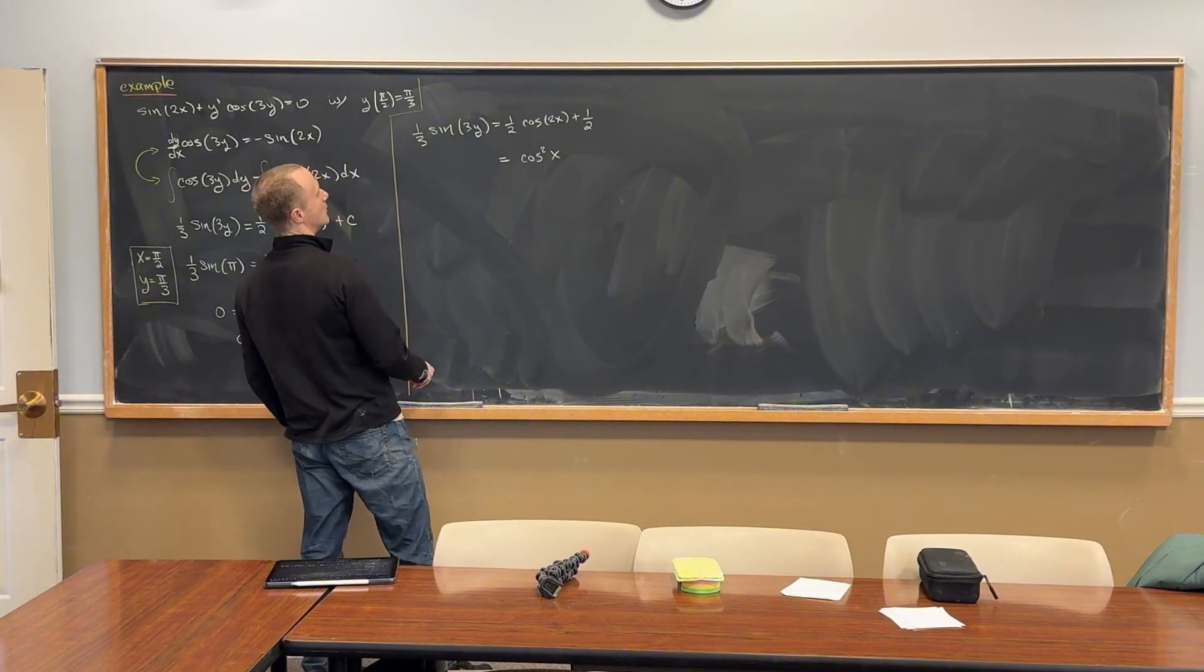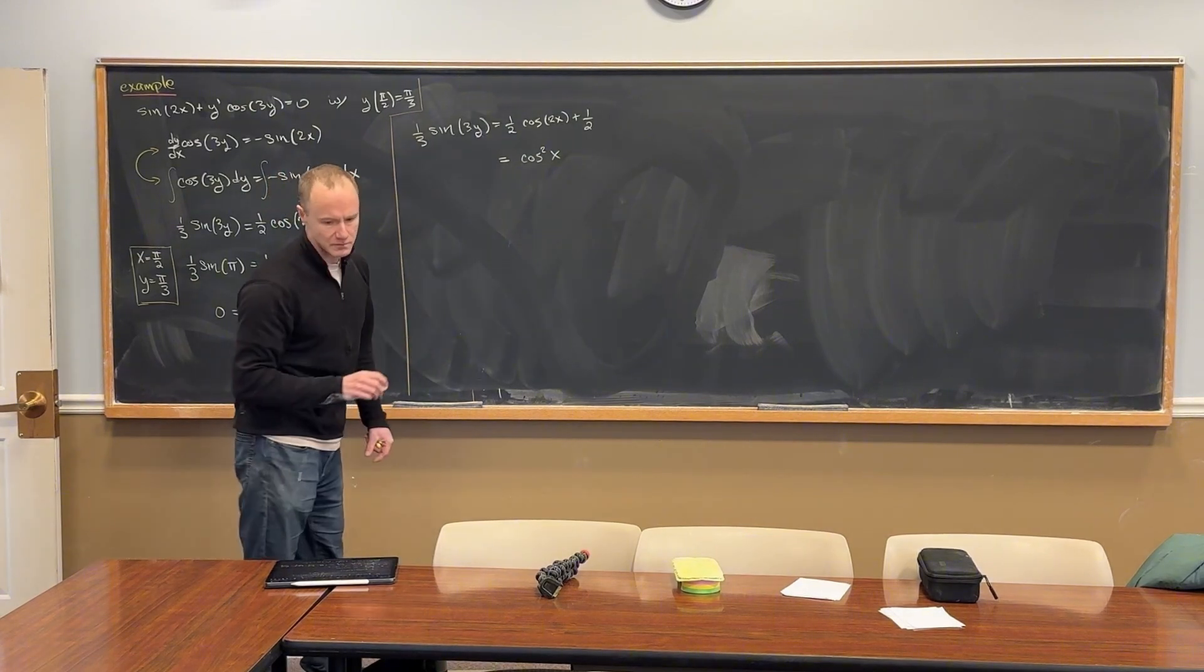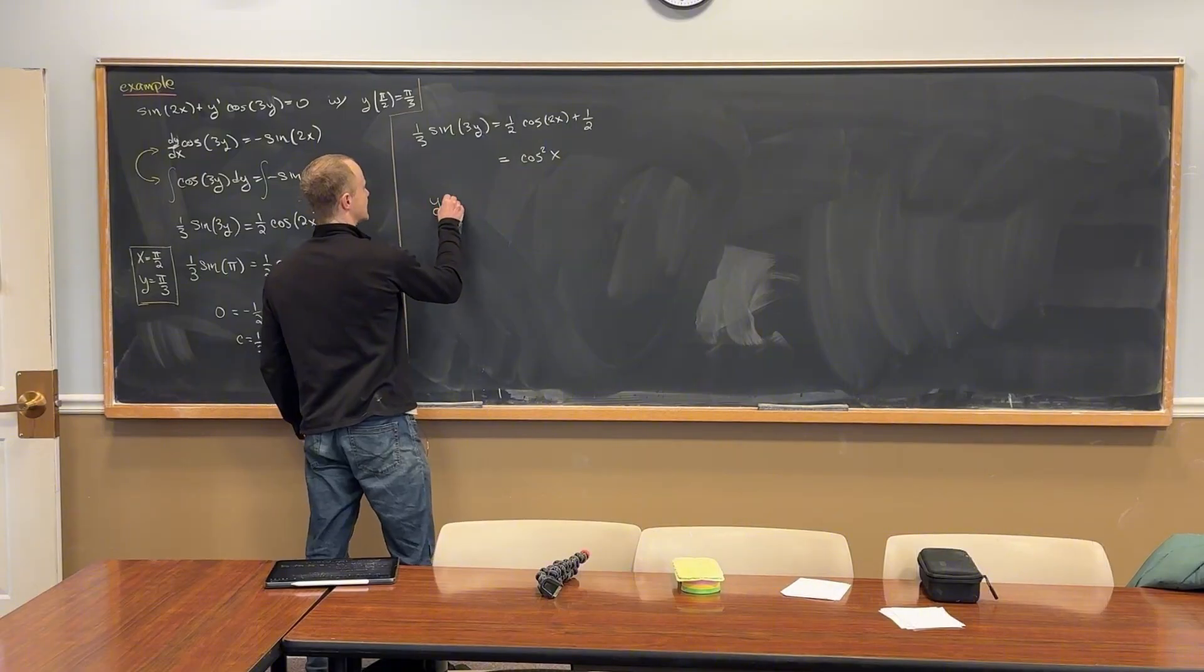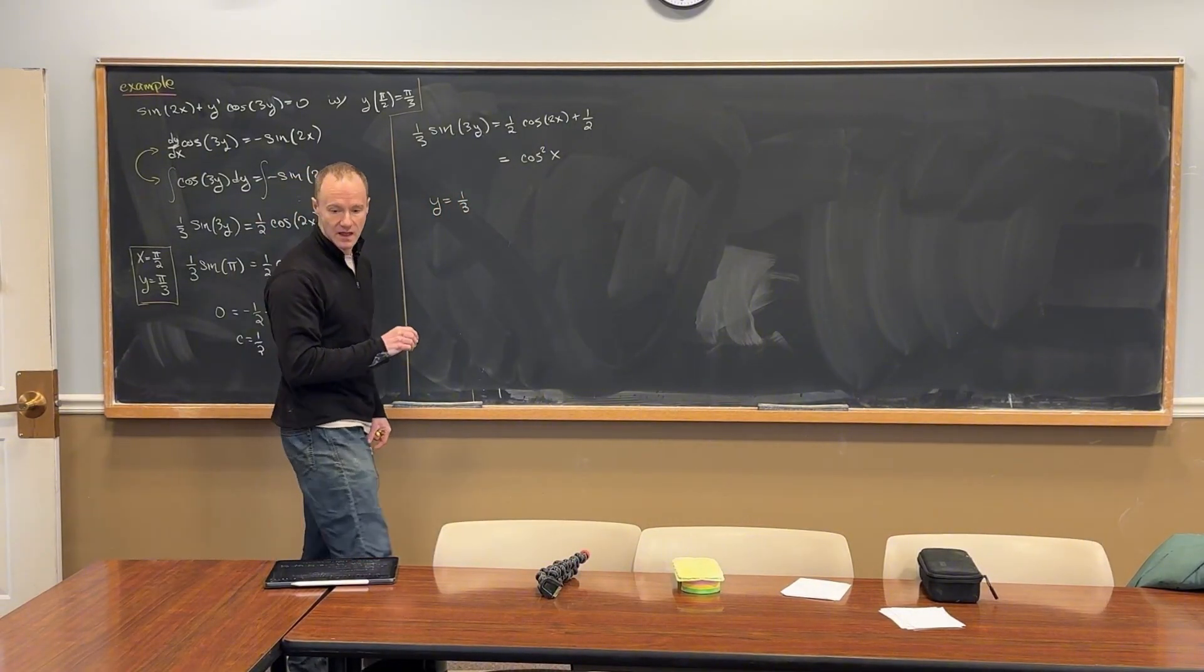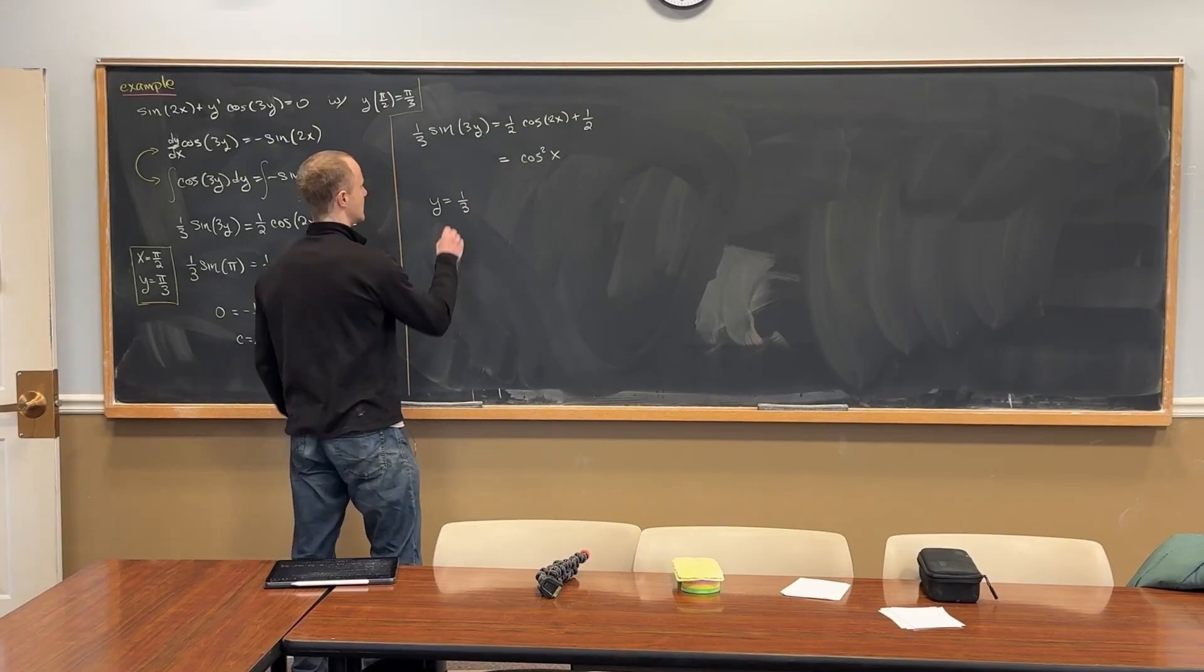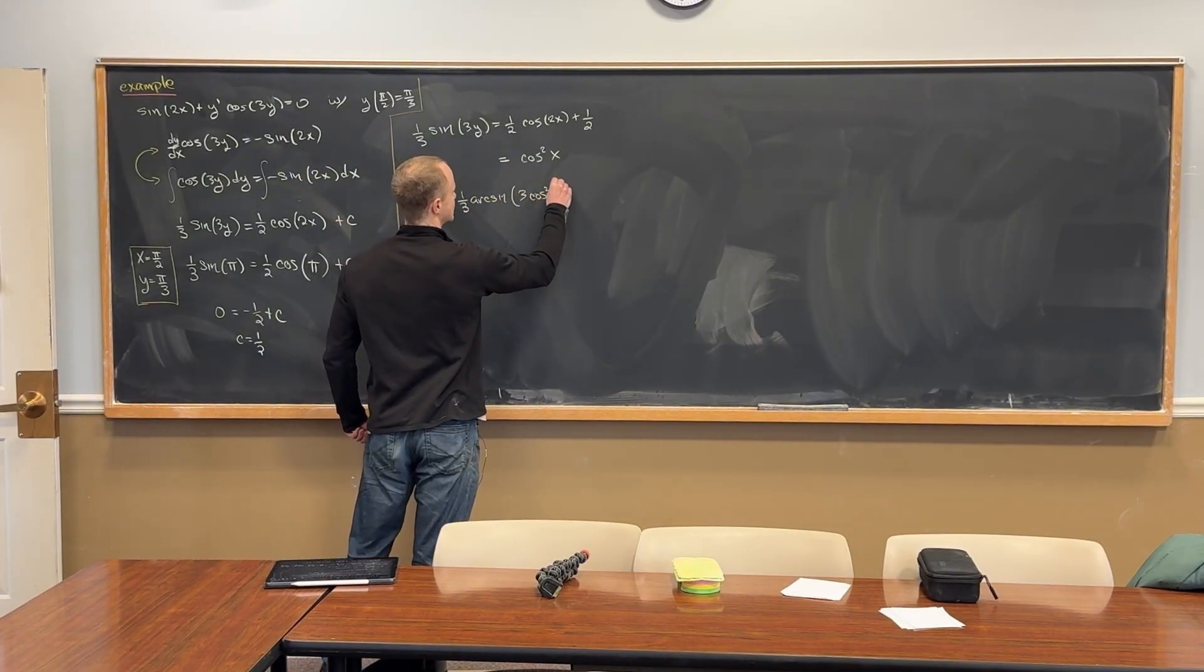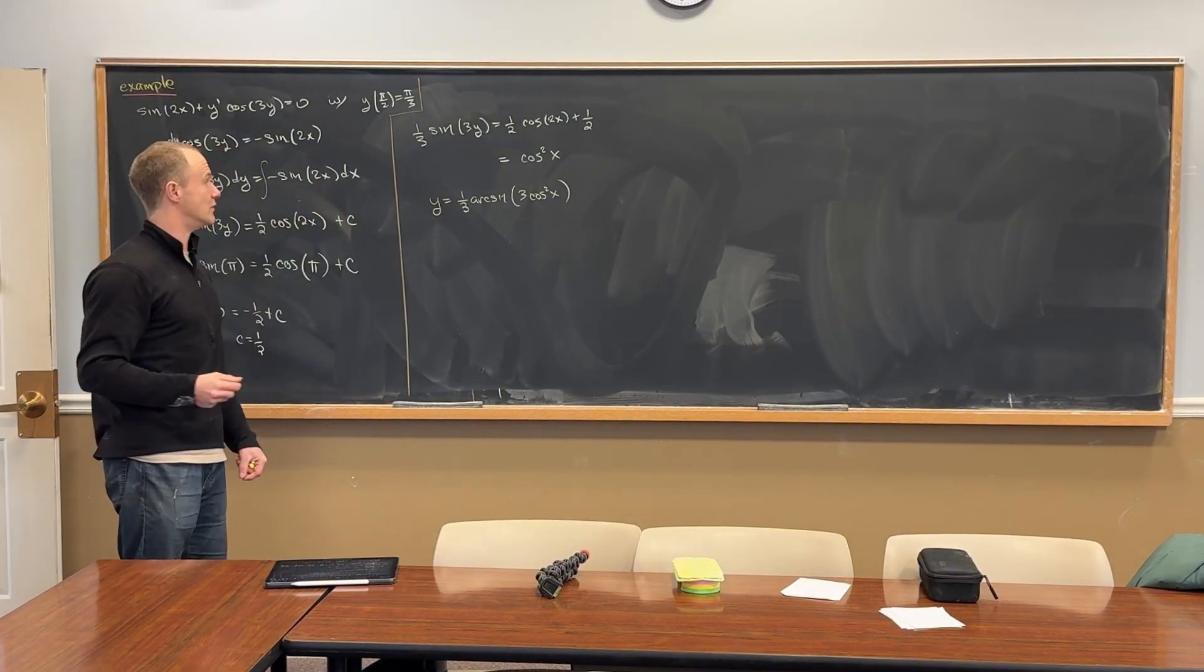And now we can kind of finish this whole thing off. And after moving stuff around, we'll have, let's see, it'll be something like this: y equals a third, and then arc sine of three times the cosine squared of x. That's what you get when all is said and done with moving things around.